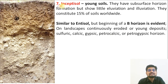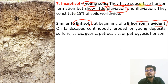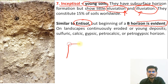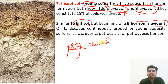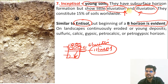The seventh order is Inceptisol — young soils. They are similar to Entisols but their B horizon is evident. They have subsurface horizon formation but show little eluviation and illuviation. Eluviation is when minerals at the surface come down to a particular layer. Illuviation is when those deposits penetrate into deeper horizons of the soil. Both processes are very limited in Inceptisols.